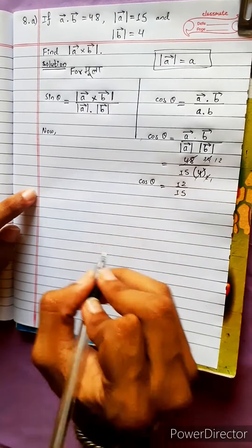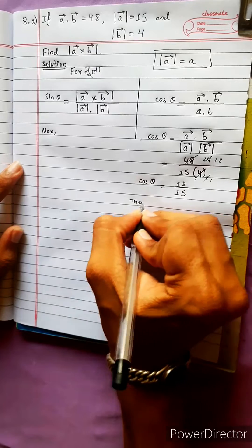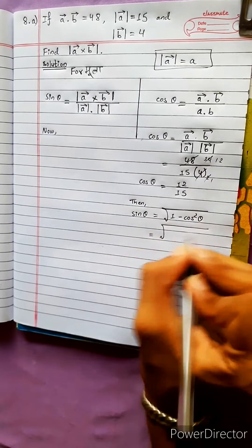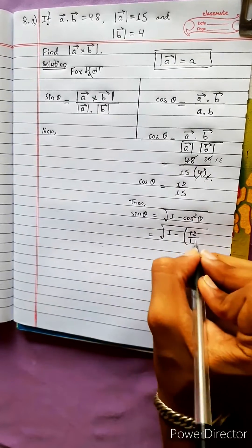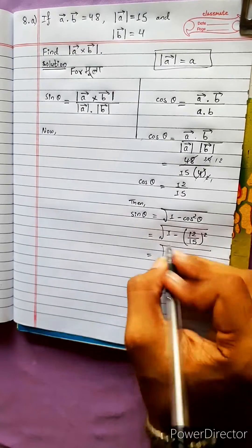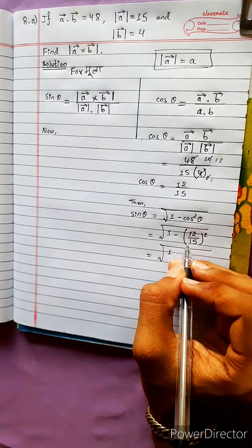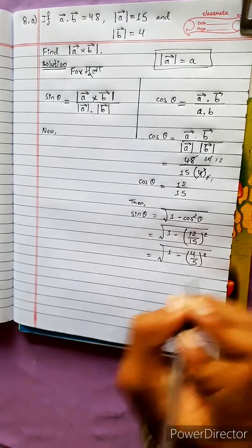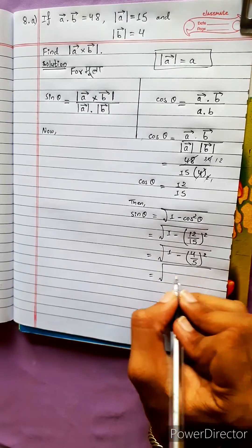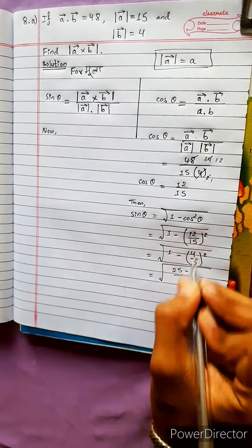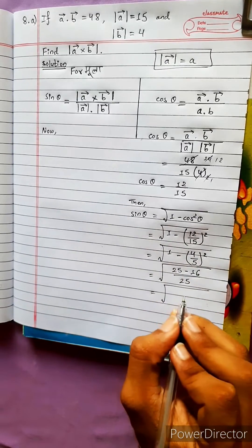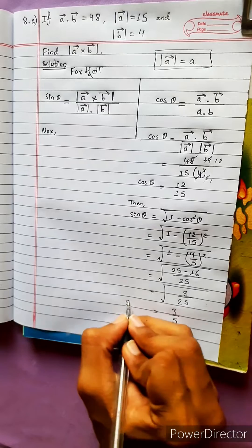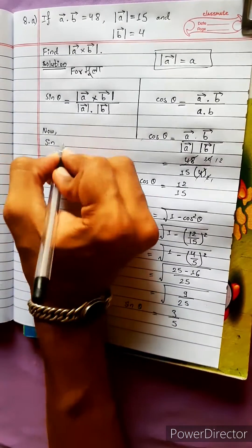Sin theta equals the square root of 1 minus cos squared theta. With cos theta equal to 12 by 15, we get 1 minus (12/15) squared. That is 25 minus 16 over 25, which equals 9 over 25. Therefore sin theta equals 3 by 5.